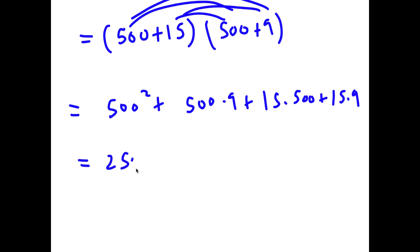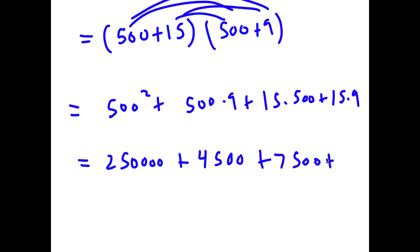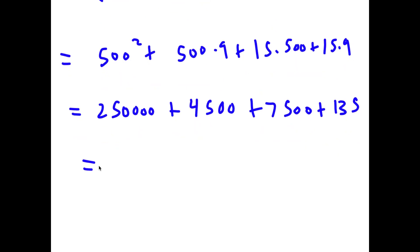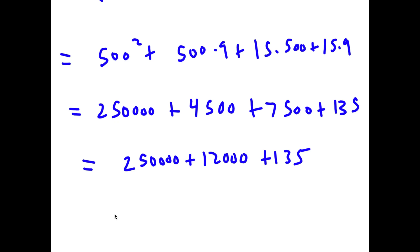500 squared is 250,000. Plus 500 times 9 is 4,500. Plus 15 times 500 is 7,500. Now 4,500 plus 7,500 is 12,000. So I have 250,000 plus 12,000 plus 135, which is equal to 262,135.